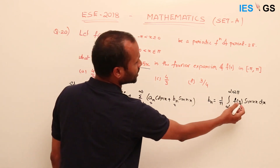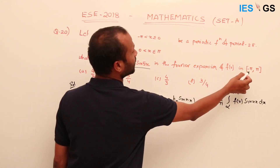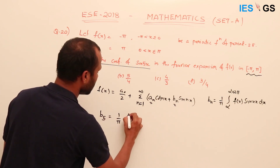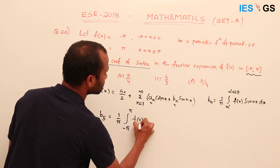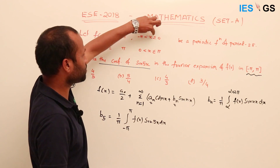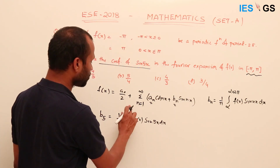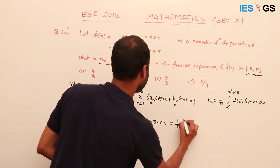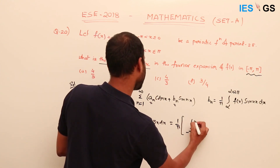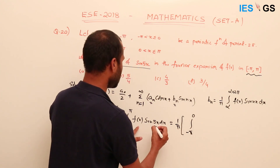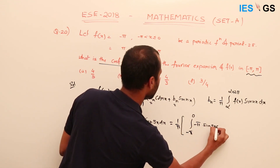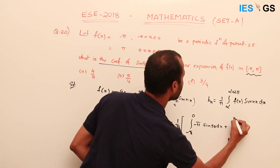When n = 5, b₅ = (1/π) ∫[−π to π] f(x) sin(5x) dx. Since f(x) has two definitions — −π on [−π, 0] and π on [0, π] — we split the integral: b₅ = (1/π) [∫[−π to 0] (−π) sin(5x) dx + ∫[0 to π] π sin(5x) dx].